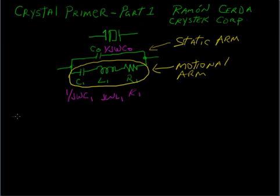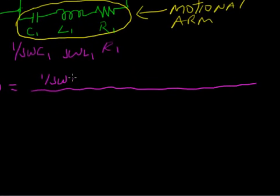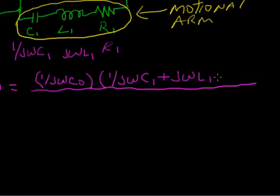So the impedance will be Z of J omega is equal to 1 over J omega C0 times this series combination.